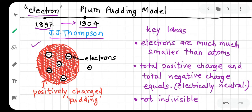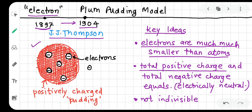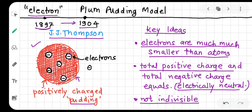The key ideas of Thomson's plum pudding model: electrons are much, much smaller than atoms. The total positive charge and the total negative charge of the electrons balance each other, making the atom electrically neutral. Also, atoms are not indivisible — an electron, which is a small particle, can be removed from the atom. This was our understanding by 1904.